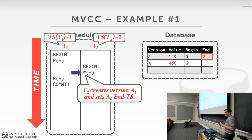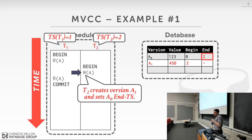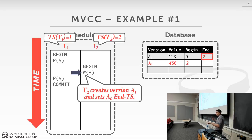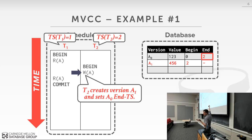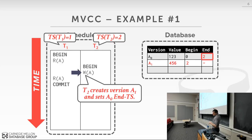One obvious problem: what if the transaction that created this change aborts? We'd have to reverse those end timestamps. If you update a billion tuples, that's a lot of writes on abort. One way to get around this is to maintain an additional transaction status table where you record the current status of each transaction. If anyone comes along to read a version and wants to check whether it's actually visible, they look up the creating transaction in this table. If it's still active, that version is not yet visible.